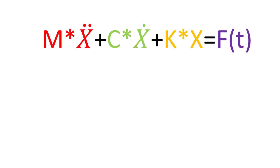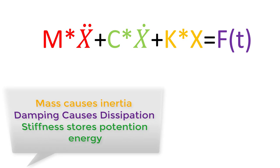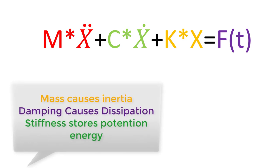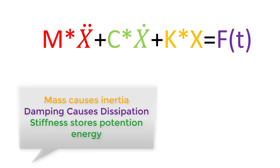If we look at the general governing equation of motion for a vibratory system, it consists of three terms: the first is the inertial term, the second is the dissipated energy term, the third is the potential energy term, and the force term on the right-hand side is your external excitation term.